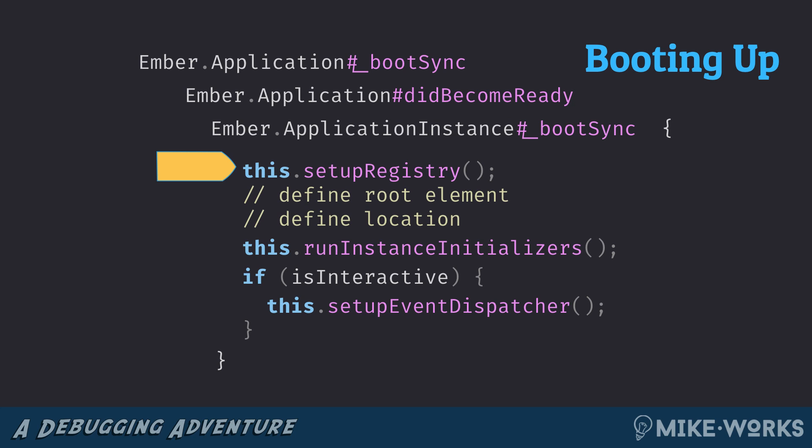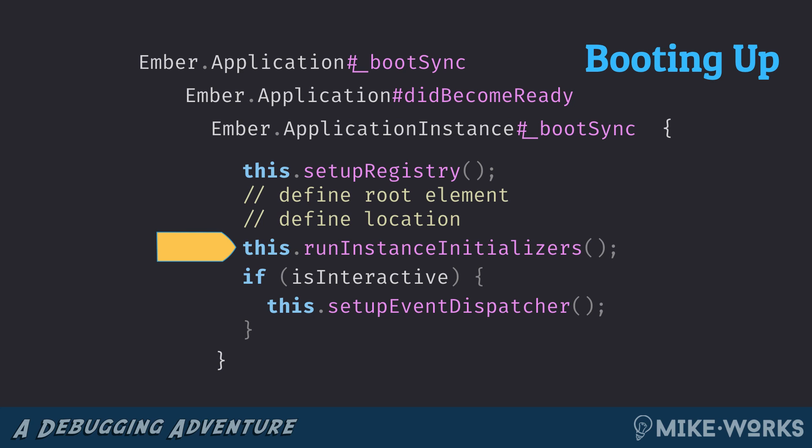When you ask the container for a service and that service hasn't been instantiated yet, it needs to go and get the factory for it — that's part of what this phase of the process does. We also define the root element and location of the Ember app so we know where we're going to render and what type of things to listen to to detect navigation throughout our app.